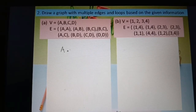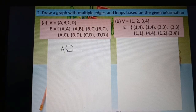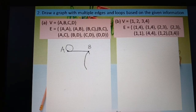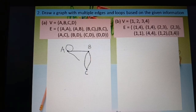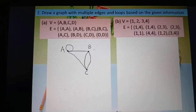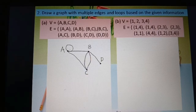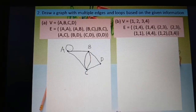Start with vertex a. Draw loop aa. Then edge a–b. Then edge b–c, and again b–c as a multiple edge. Then a–c, connecting a to c. Then b–d, connecting to d. And loop dd as another loop.